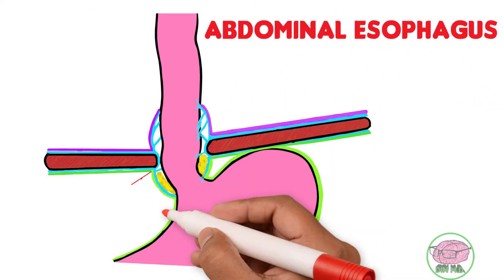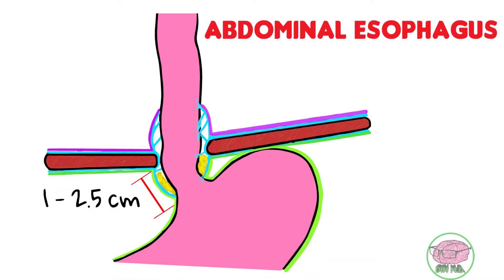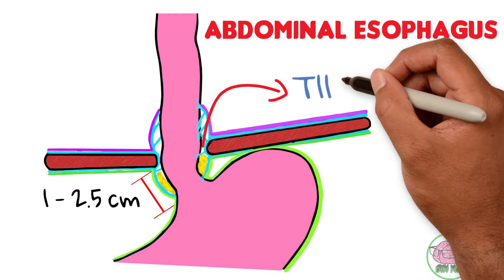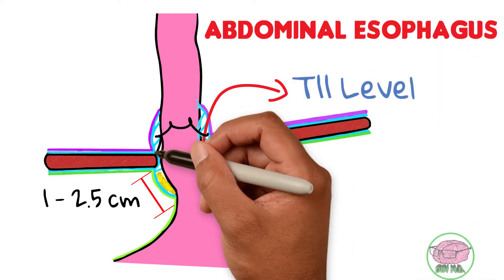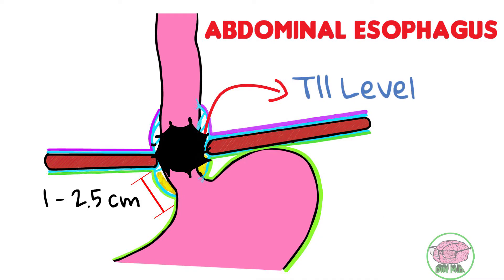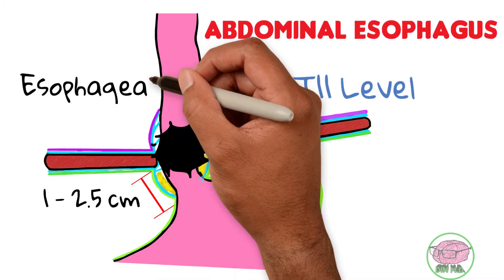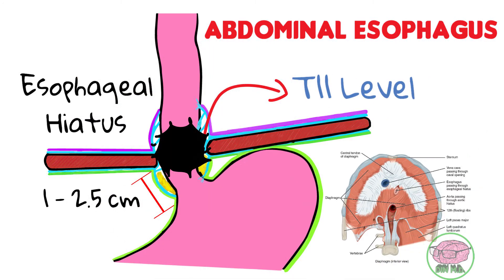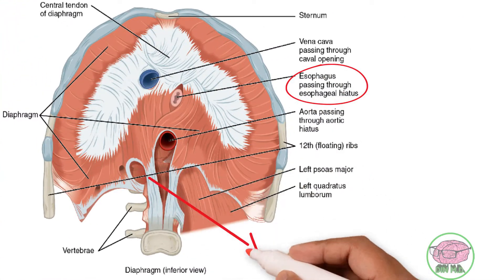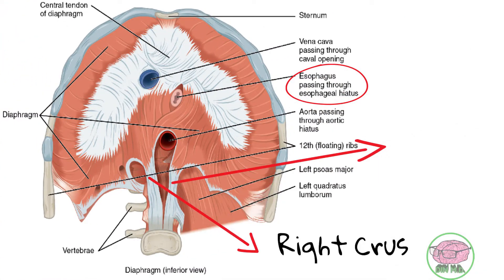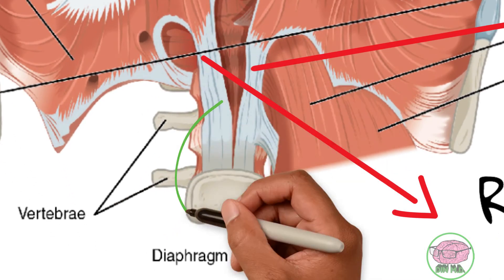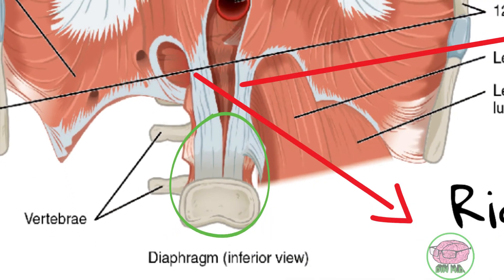The abdominal esophagus is the shortest, measuring only 1 to 2.5 centimeters. The esophagus reaches the abdomen by going through the diaphragm at the level of the T11 vertebra. The hole in the diaphragm through which the esophagus passes is known as the esophageal hiatus and it is created by the diaphragmatic cross, the right cross and the left cross. These are structures that the diaphragm uses to attach itself to the vertebral column.